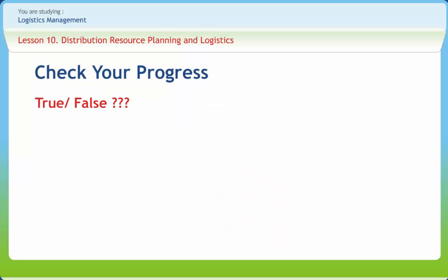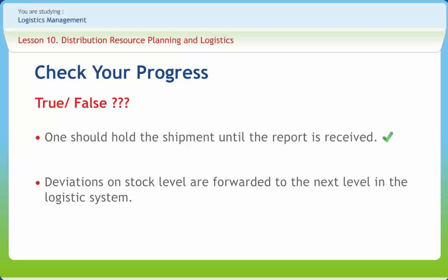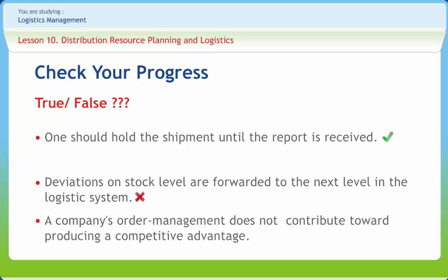Now let us answer true or false in order to gauge your progress. The first statement: one should hold the shipment until the report is received — True. The second statement: deviations on stock level are forwarded to the next level in the logistic system — False. The third statement: a company's order management does not contribute towards producing a competitive advantage — False.